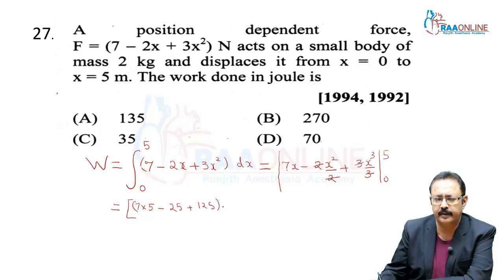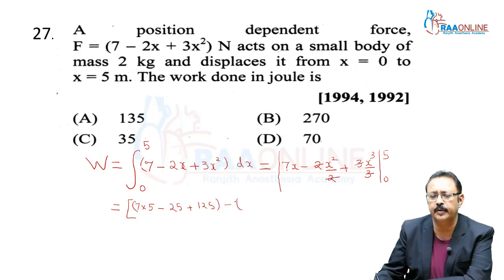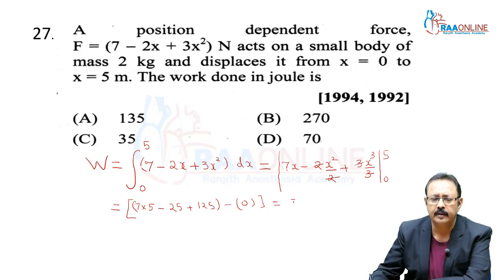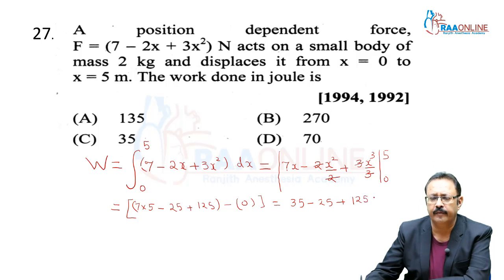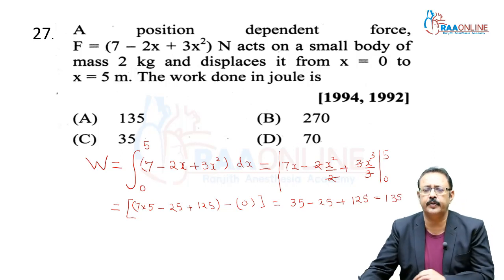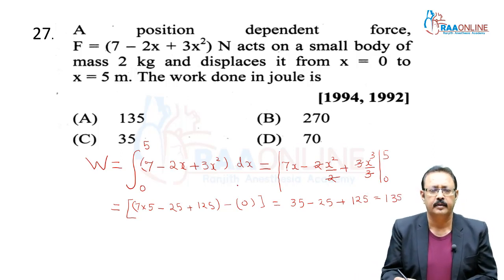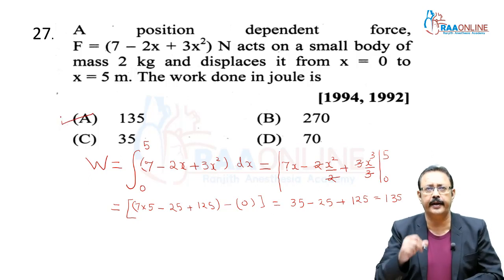Then subtract the lower limit value (put x = 0, all terms become 0). So the result is 35 − 25 + 125 = 135 joules. We are in SI units, so we get in joules. We are getting option A (135 J).